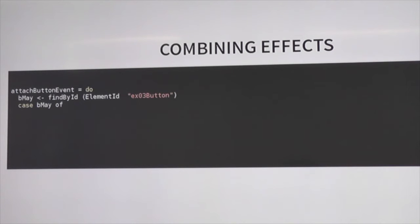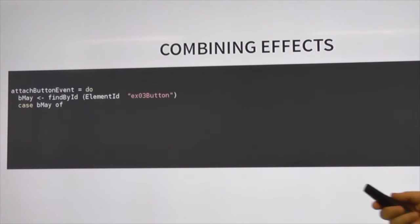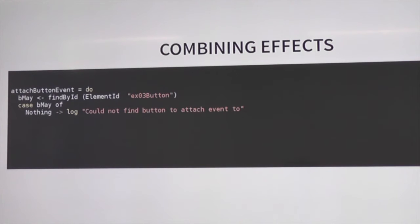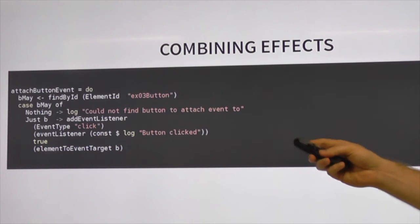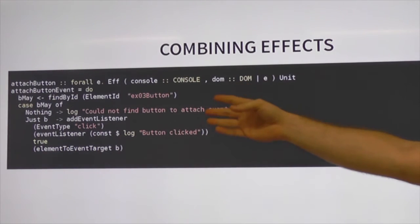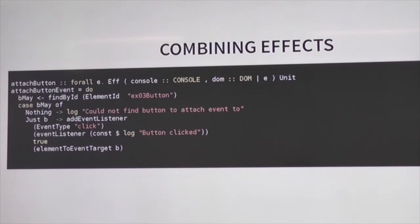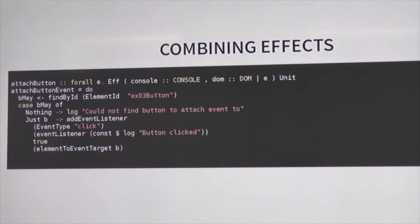Let's look at combining these effects. Say we need to write a function that attaches a button event to a button. We find the element by its ID — it might be there or not. If it's not there, we just log 'I couldn't find the button.' If the button is there, we add our event listener: on click, we log that the button was clicked. When we look at our effect type, we now have Console and DOM. We didn't have to do anything to merge these together or do any type casting — they just gel together because they're both extensible. Taking something that has Console open and DOM open merges together really nicely.